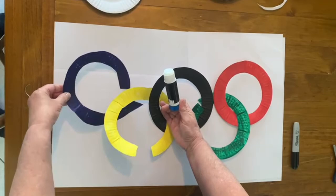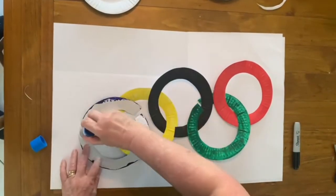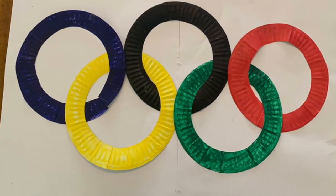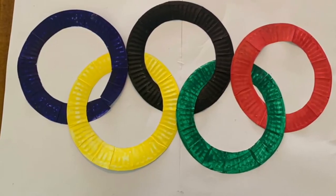And glue them into place. Just pop a little bit of glue on the back. Here we go, just enough to join them up. And there we have our Olympic rings. Then you're all set for the Olympic Games in Japan. So let's open them up again.